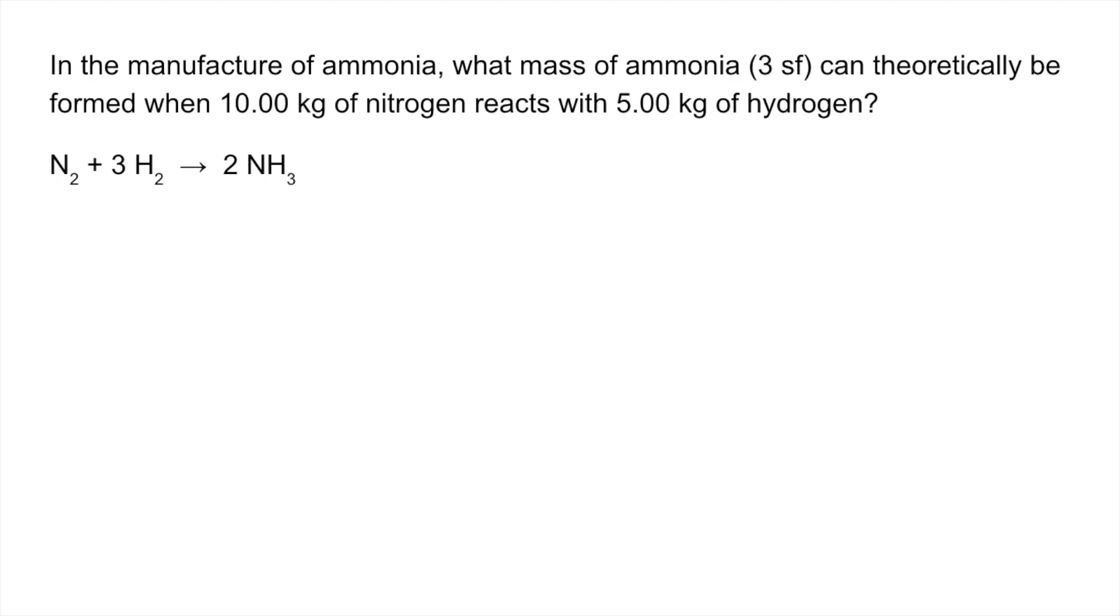Okay, so just as before, we're going to work out the moles of nitrogen and moles of hydrogen that we've got. So mass over MR, remember we have to have the mass in grams. So the moles of nitrogen is 10,000 grams over its MR 28, so 357.14. Likewise for hydrogen, 5,000 grams over 2 gives us two and a half thousand moles of hydrogen.